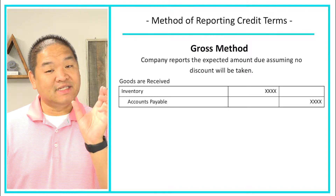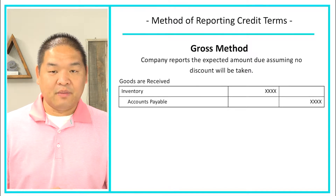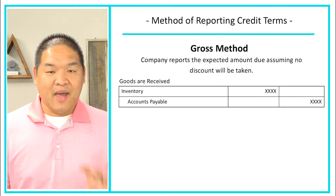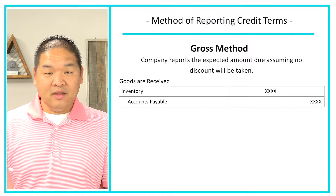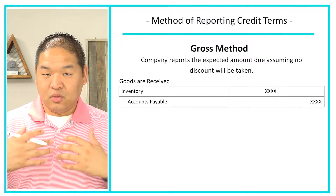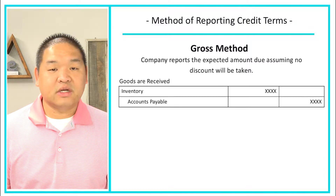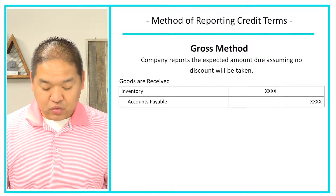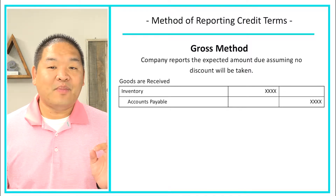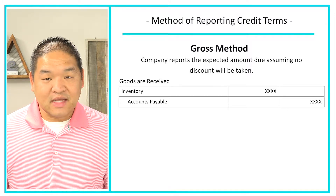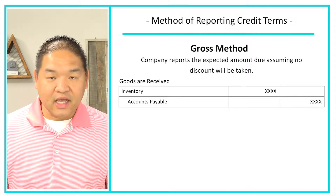From a journal entry standpoint, when the goods are received, the company is going to debit inventory and credit accounts payable for the amount they expect to pay — no discount applied, just whatever they're going to pay without the discount. So: debit inventory, credit accounts payable.